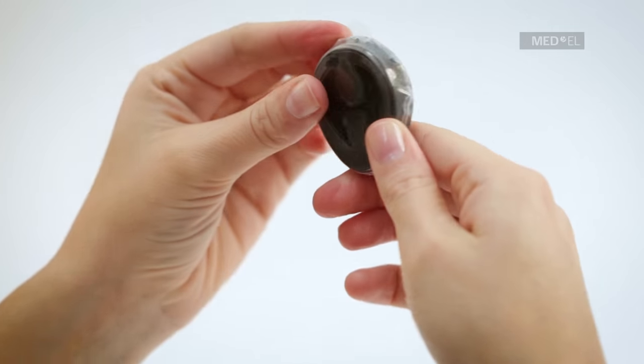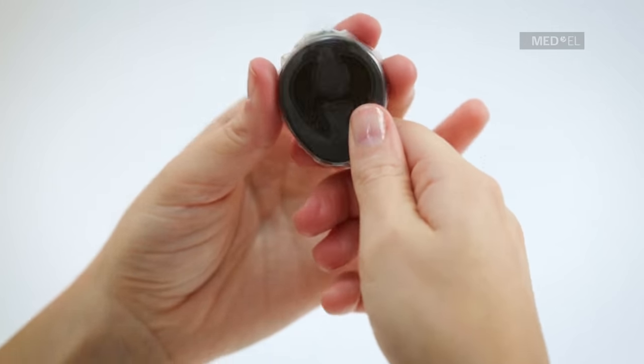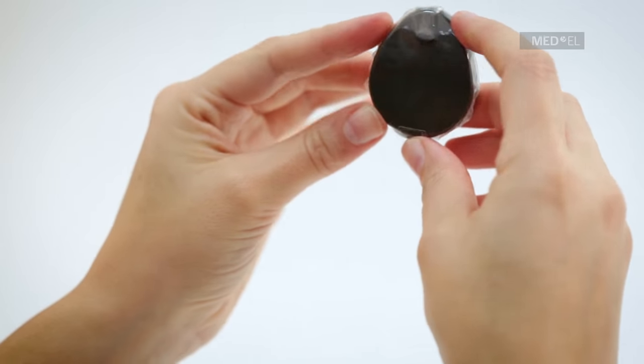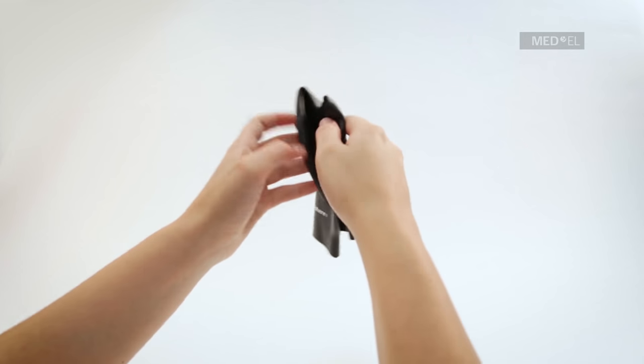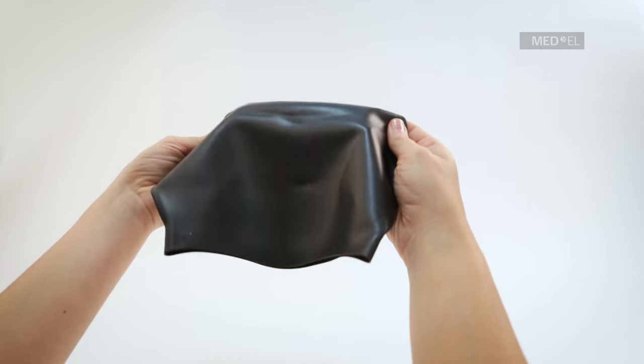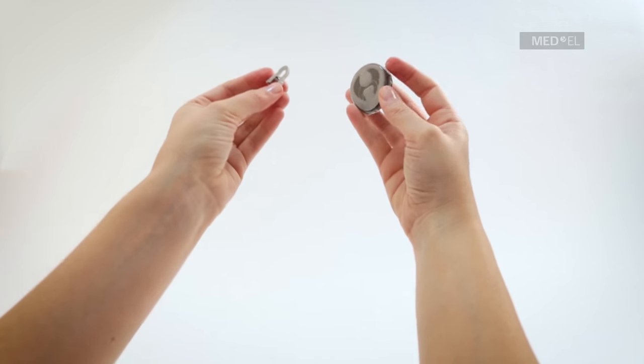Your Rondo with waterware is now ready to use. Position Rondo with waterware over the implant. To avoid losing the processor during activities, you should use additional fixation, such as the Med-El Sports headband, a swimming cap, or the attachment clip.